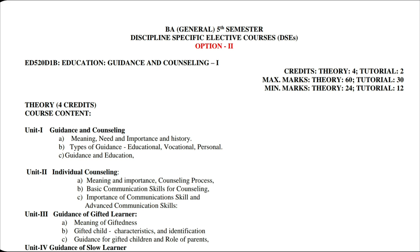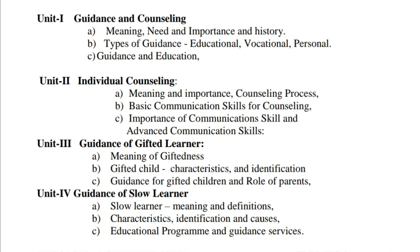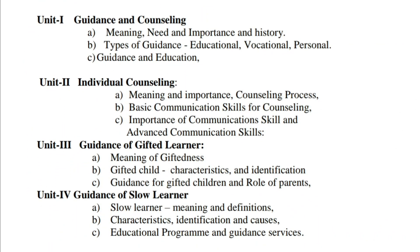The title of Option 2 is Guidance and Counseling. The code for this is ED520D1B. Course content: Unit 1 covers Guidance and Counseling — A. Meaning, Need and Importance, and History of Guidance and Counseling; B. Types of guidance: educational guidance, vocational guidance, and personal guidance.